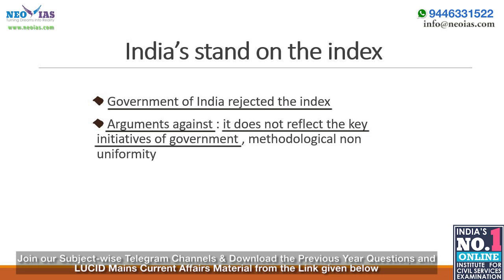Regarding the quantity and quality of education parameter: quantity is assessed using enrollment rates reported by UNESCO, while quality is determined using harmonized test scores from major international student achievement testing programs. One such program is PISA (Program for International Student Assessment), which measures 15-year-old students' reading, mathematics, and science literacy every three years, conducted by the OECD. However, it does not cover more than 100 nations and some have limited regional coverage, making this methodology for the education parameter complex and non-uniform.